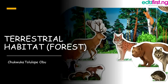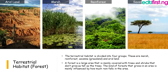Terrestrial habitat: forests. The terrestrial habitat is divided into four groups: marsh, rainforest, savannah or grassland, and arid land. A forest is a large area mainly covered with trees and shrubs that don't grow as tall as the trees. The kind of forest that grows in an area is mainly influenced by how much rainfall that area receives.